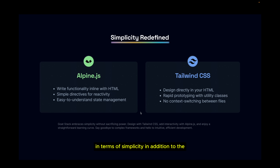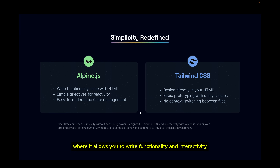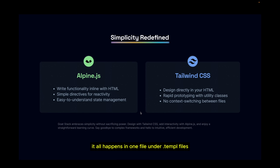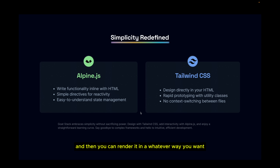In terms of simplicity, in addition to the simplicity of Go syntax and Temple logic, we have Alpine.js, which lets you write functionality and interactivity right inside your HTML, combined with Tailwind CSS for styling. You don't have to switch between files to edit styles or interactivity — it all happens in one .temple file, which then compiles into Go files for performance.